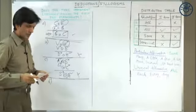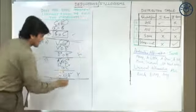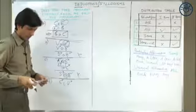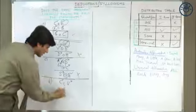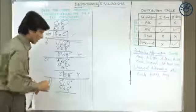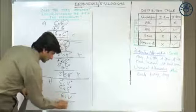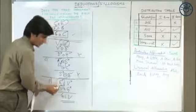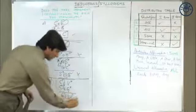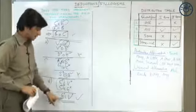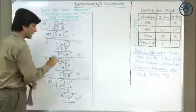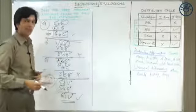Part D says some crazy dudes are wildness. Some is I — both terms not distributed. Statement 2: all crazy dudes are guitarists. All is A — first term distributed, second not distributed. The conclusion is some guitarists are wildness. Middle term is distributed at least once, one premise is particular, so the conclusion must be particular. Both terms in some are not distributed — so this is a valid conclusion. Overall, parts A and D are valid conclusions, so the best answer option is C.